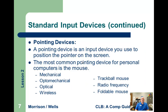Then pointing devices — several of those are available. The most common is the mouse, which is optomechanical or optical. Wireless mice are common. A trackball mouse is used by people that may have a little trouble moving their arm. Honestly, I've never really used or seen used a foldable mouse.